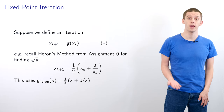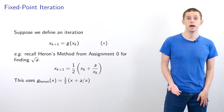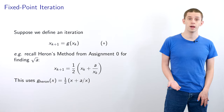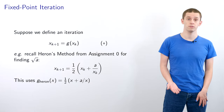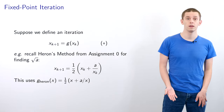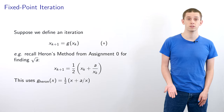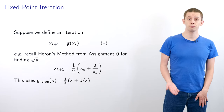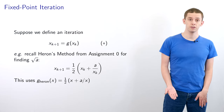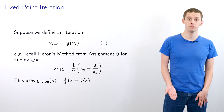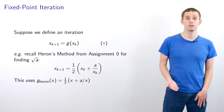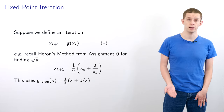Suppose we define an iteration x_{k+1} = g(x_k) — we've already seen this at several points before in the course. For example, with Heron's method for finding the square root of a number a, we can write x_{k+1} = (1/2)(x_k + a/x_k), and this fits our definition if we use g_Heron(x) = (1/2)(x + a/x).